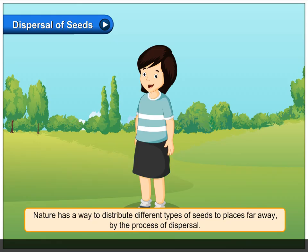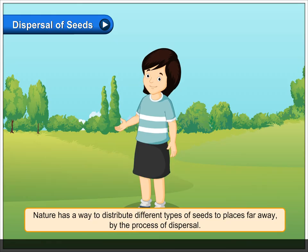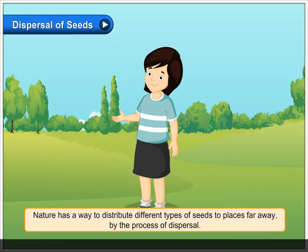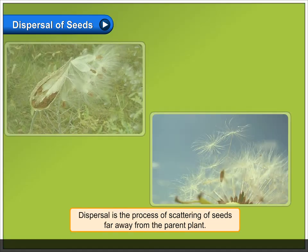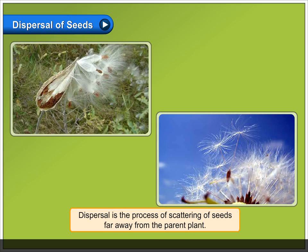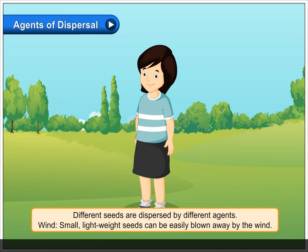Dispersal of seeds: nature has a way to distribute different types of seeds to places far away by the process of dispersal. Dispersal is the process of scattering of seeds far away from the parent plant.